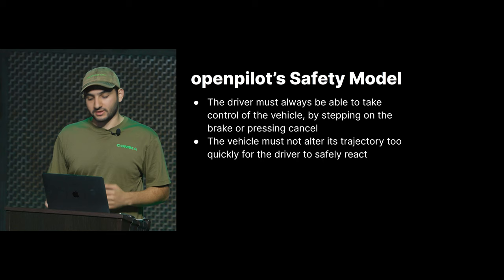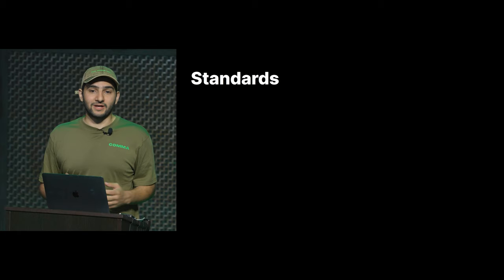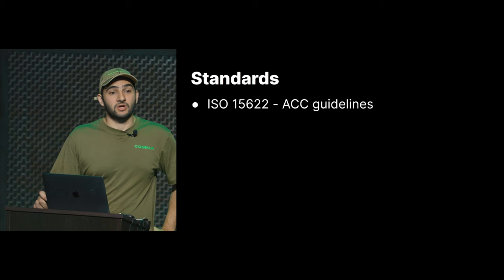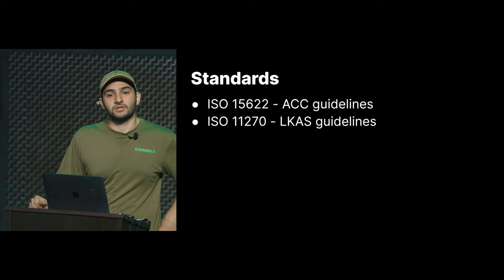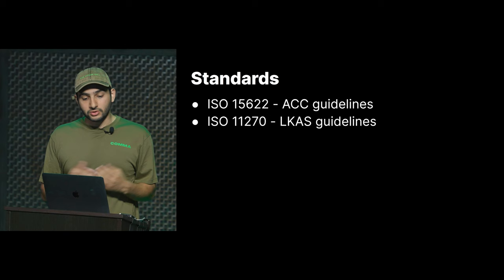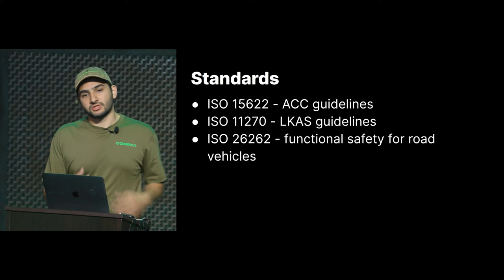There are pretty good standards around this that allow us to formalize the safety model, give it specific actuation limits, and give us a good way to think about safety. ISO 15622 gives us good guidelines for ACC, and there's another ISO standard — 11270 — for lane keep. We recently updated our safety documentation with some of these actuation limits so they're more formal. They're like 15-page PDFs; this stuff is very accessible. And then ISO 262 is a general framework for thinking about functional safety for road vehicles.